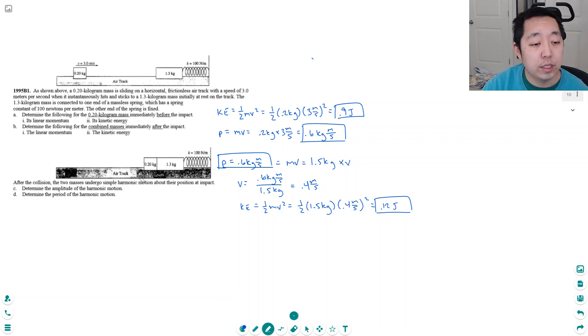After the collision the two masses undergo simple harmonic motion about their position at impact. Determine the amplitude of the harmonic motion. Well to know the amplitude I have to do some kind of energy conversion, right. I started off with this much kinetic energy and the full distance it will go is when I convert all of the kinetic energy into potential energy in the spring.